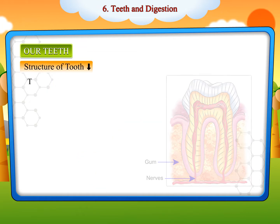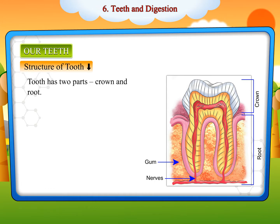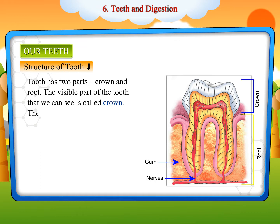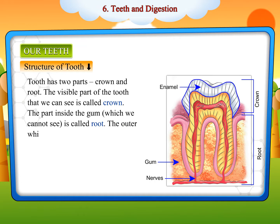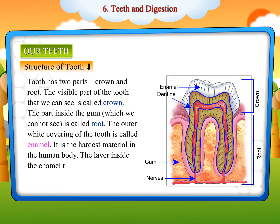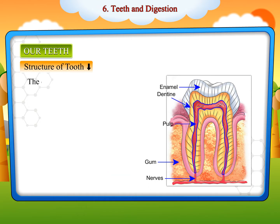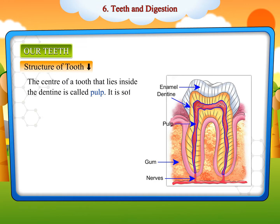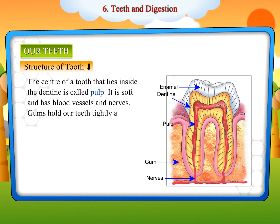A tooth has two parts: crown and root. The visible part of the tooth that we can see is called the crown. The part inside the gum, which we cannot see, is called the root. The outer white covering of the tooth is called enamel — it is the hardest material in the human body. The layer inside that forms the main hard part of the tooth is called dentine. The center of a tooth that lies inside the dentine is called pulp. It is soft and has blood vessels and nerves. Gums hold our teeth tightly in place.